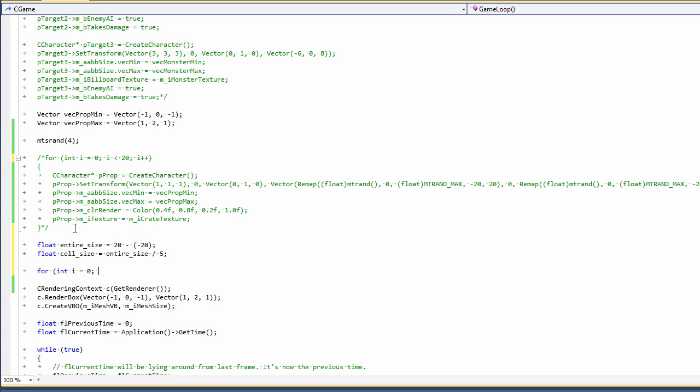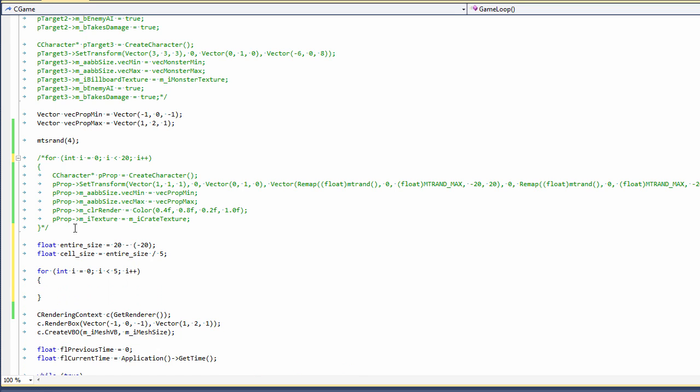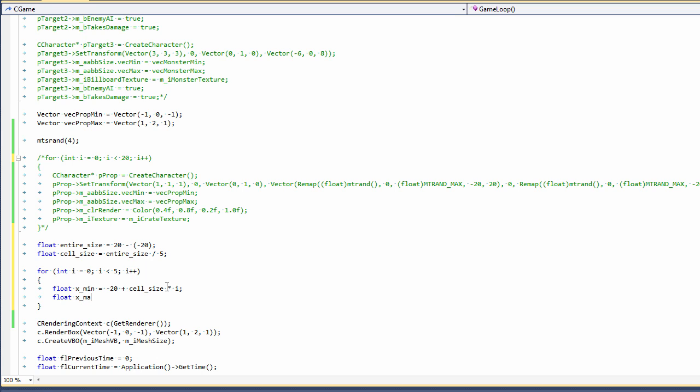Now let's make some loops - a for loop. We got to calculate the minimum and maximum extents of each cell. We're going to do this by starting at negative 20, which is the far minimum value or the far left value, and we're going to start working our way up through the values. So plus cell size times i - as i grows in this for loop it's going to get multiplied by the cell size so we're going to get blocks the size of each cell. We're going to do the same thing with the maximum except we're going to use cell size times i plus one.